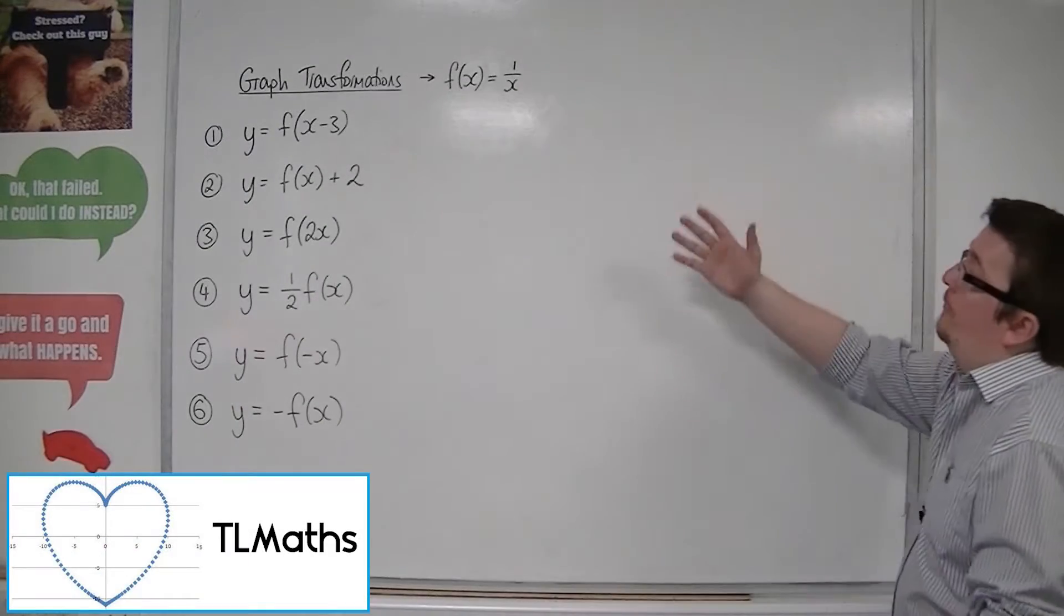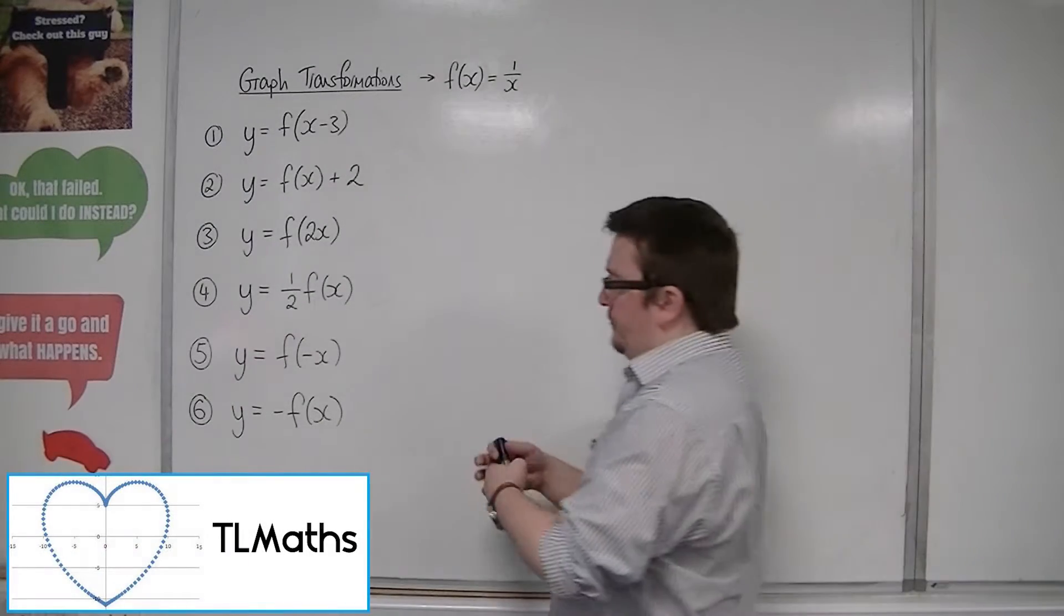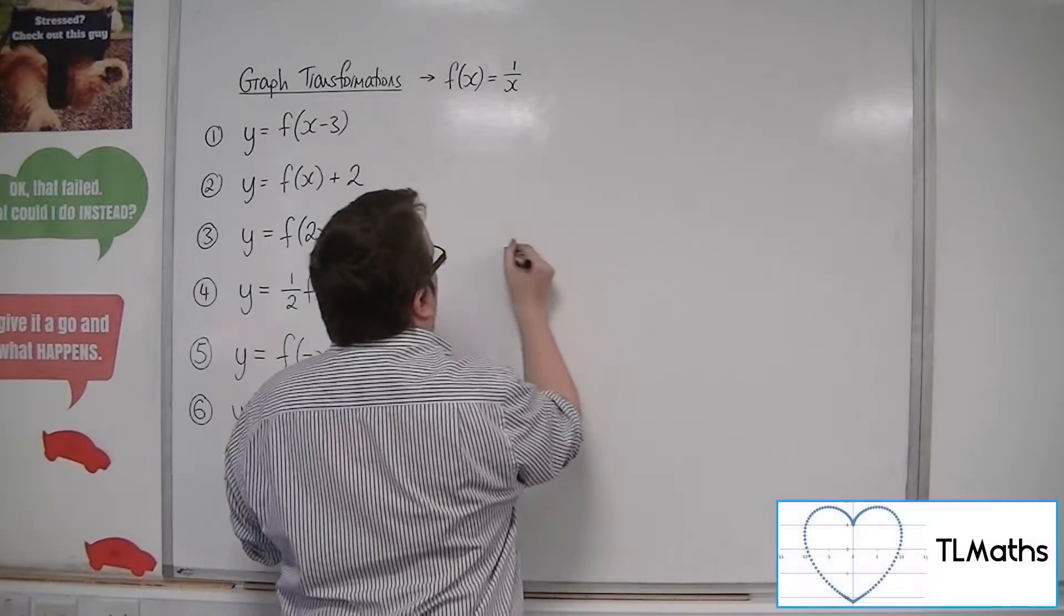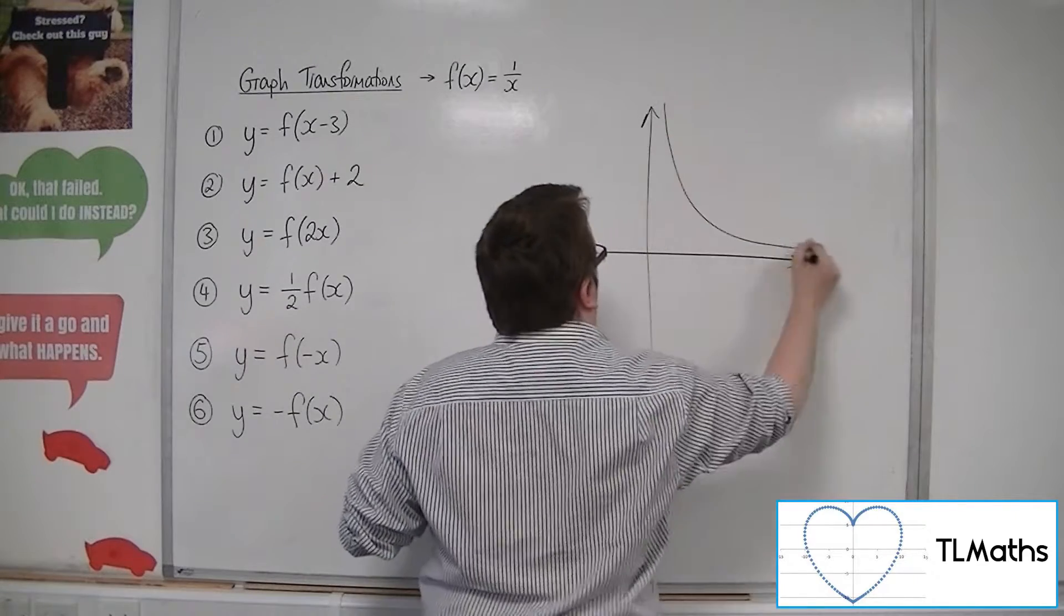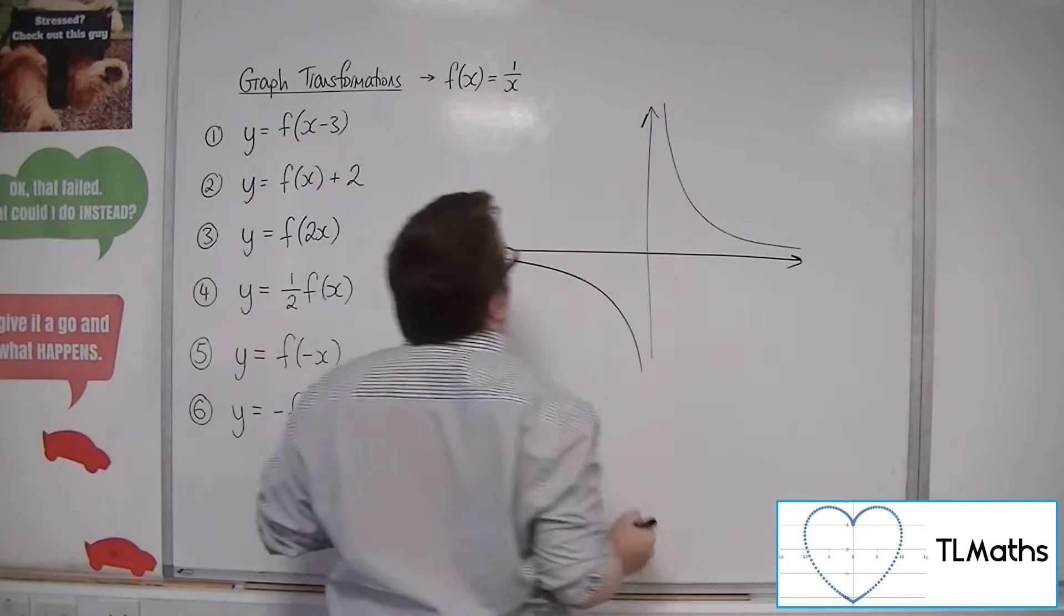Now we're going to look at f of x equals 1 over x. So, 1 over x looks like that.